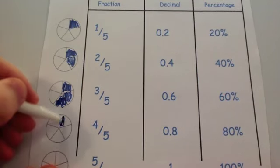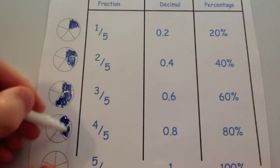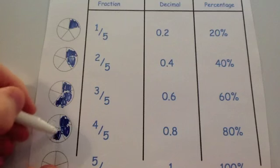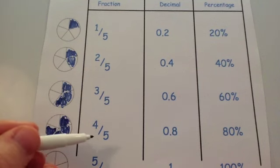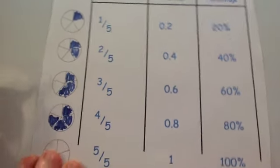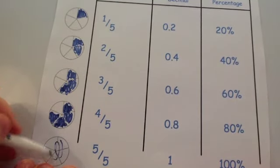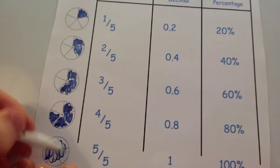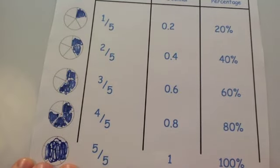Four fifths is four out of the five sections, and that's 80% or 0.8. Five fifths, as we've seen, is the whole thing shaded in — the whole shape — which is 100%.